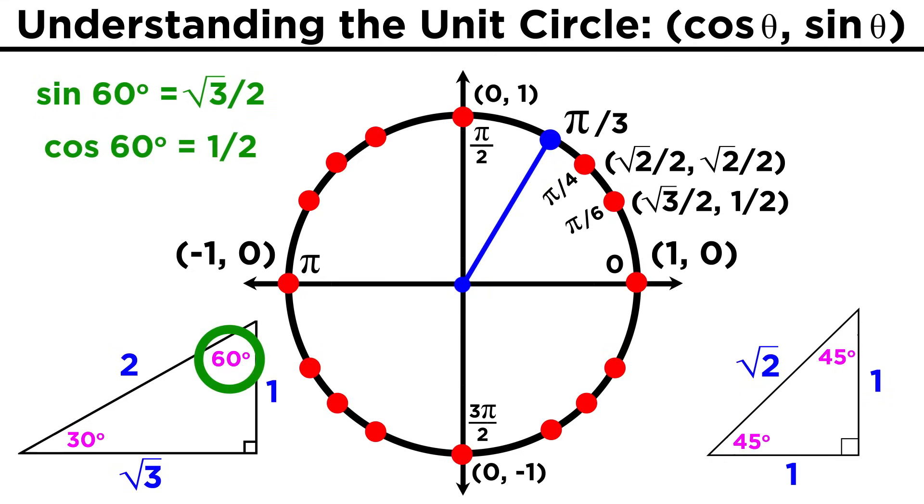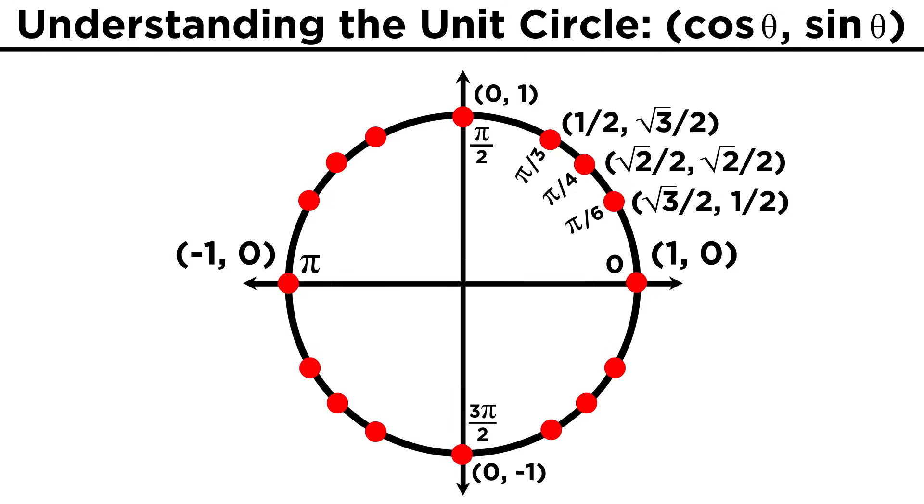For 2π/6, or π/3, we have the same values as for π/6, but reversed, since it's the same triangle, just looking at the other angle. That means that these are the coordinates of this point. And that wraps up the first quadrant.